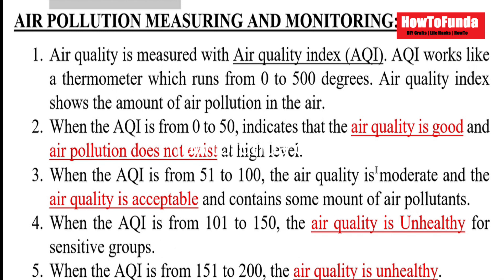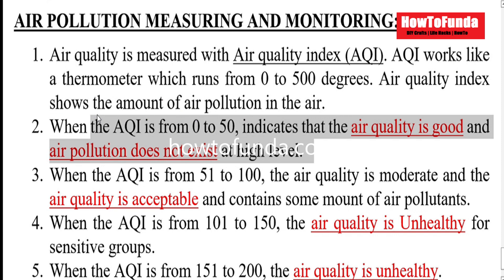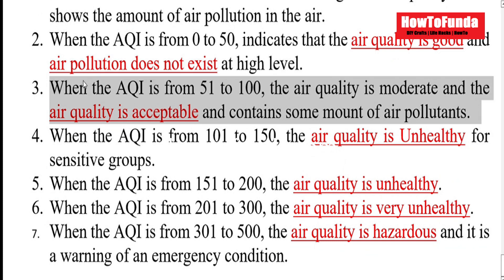How will you measure air pollution? Is there any way we can monitor and measure it? There is an Air Quality Index which we normally use to measure the air quality — similar to a thermometer which we use to measure body temperature. The Air Quality Index ranges from 0 to 500. If the Air Quality Index is between 0 to 50, it indicates the air quality is very good and air pollution does not exist at a high level. When the Air Quality Index is 51 to 100, the air quality is moderate and acceptable, containing some amount of air pollutants.